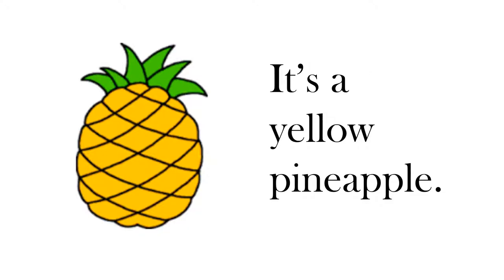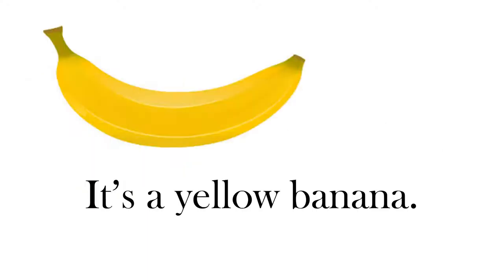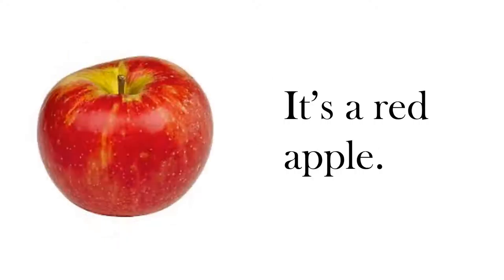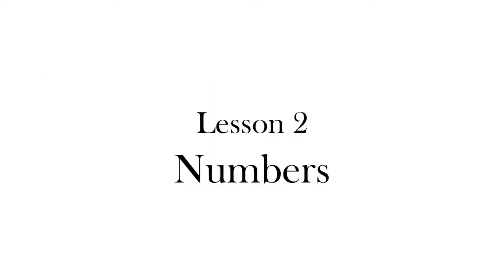It's a yellow pineapple. It's a green watermelon. It's a yellow banana. It's a red strawberry. It's a red apple. It's an orange orange. Lesson two: Numbers.